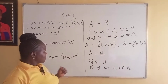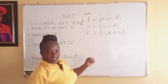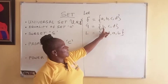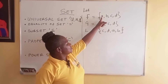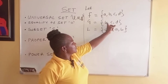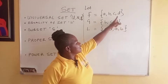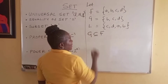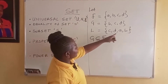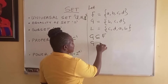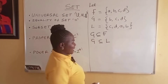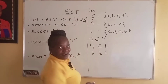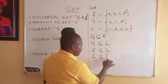Let's give an example. Given three sets, observe that every element in G is in F — B is in F, C is there, D is there. So we can write that G is a subset of F. Also, G is a subset of L. Observe also that F is a subset of L, and L is a subset of F.